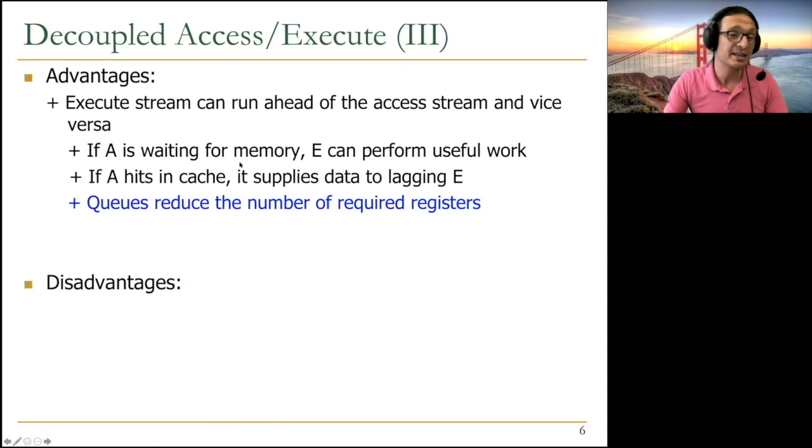So the big advantage is execute stream can run ahead of the access stream and vice versa. If the access processor is waiting for memory, execute processor can perform useful work. If access processor, for example, hits in the cache and it's not waiting for memory, it supplies the data to the lagging execute processor. Usually the memory accesses take longer, so usually execute can perform useful work, independent instructions, while the access processor is waiting.